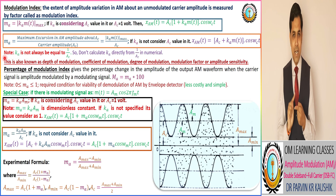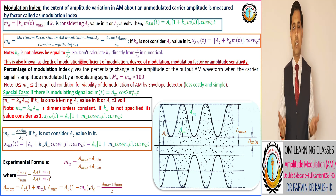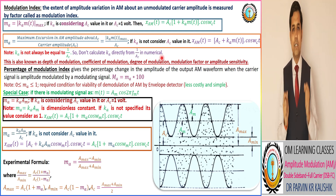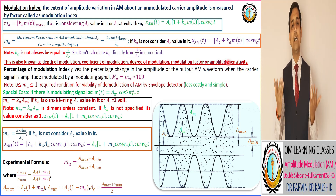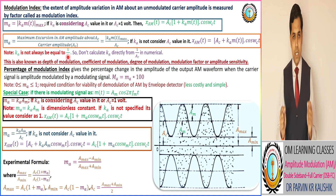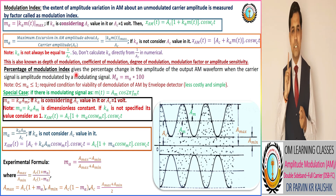The modulation index is also known as depth of modulation, coefficient of modulation, degree of modulation, modulation factor, or amplitude sensitivity. You can also express the modulation index as a percentage by multiplying it by 100.